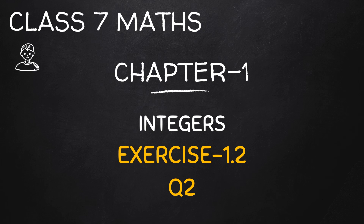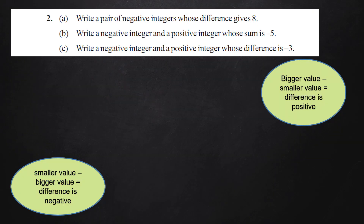We will now discuss exercise 1.2, question number 2, which asks: write a pair of negative integers whose difference gives 8. Remember, the default definition of difference is we always subtract bigger value minus smaller value. But if the difference is negative, that means we are subtracting a bigger value from the smaller value. So here, we just have to pick two negative integers whose difference gives 8.